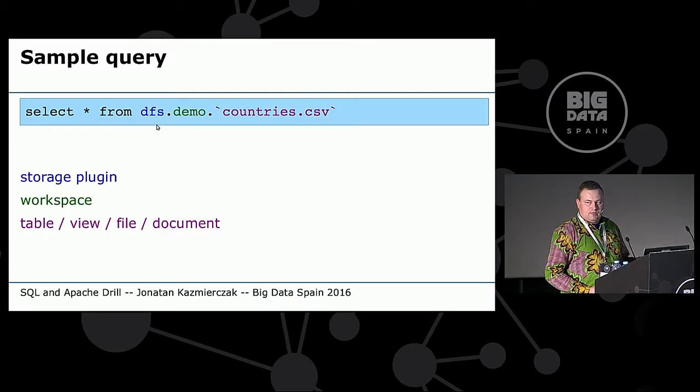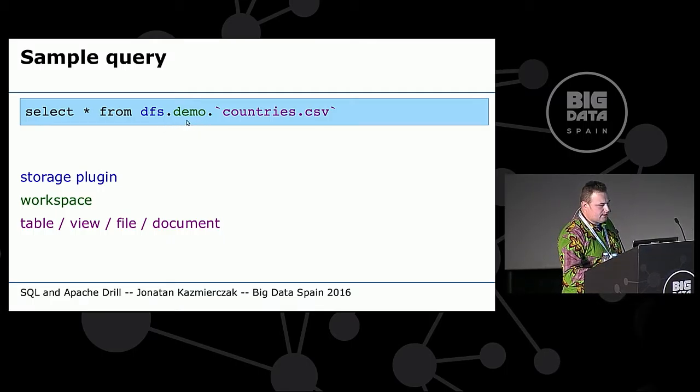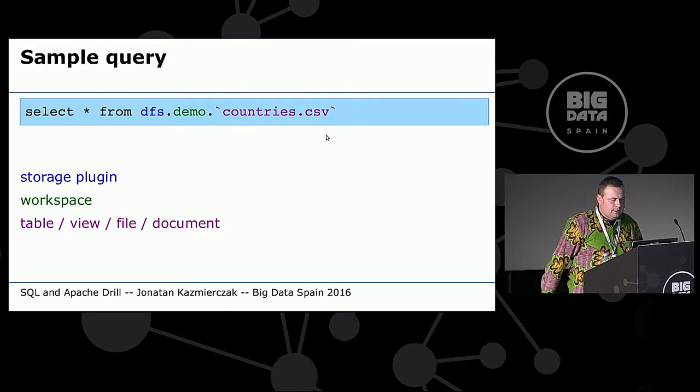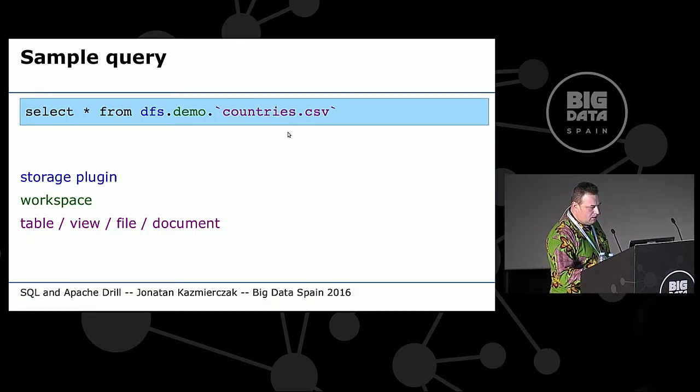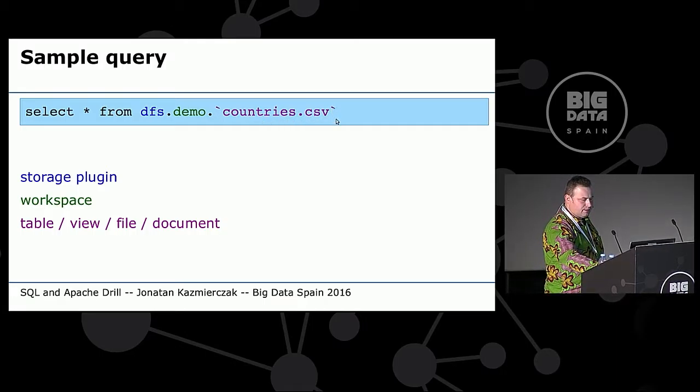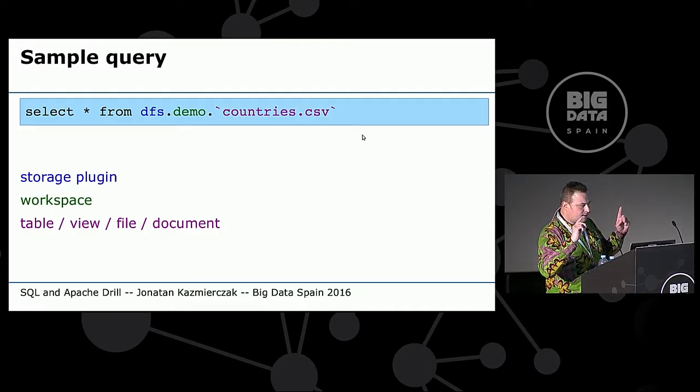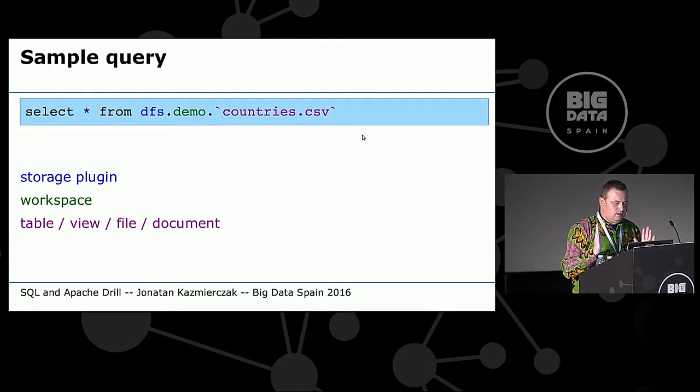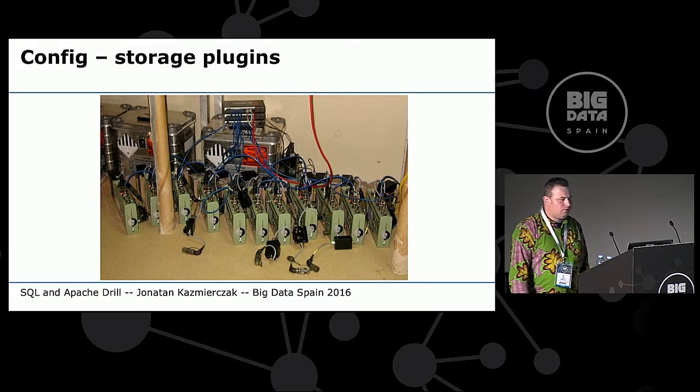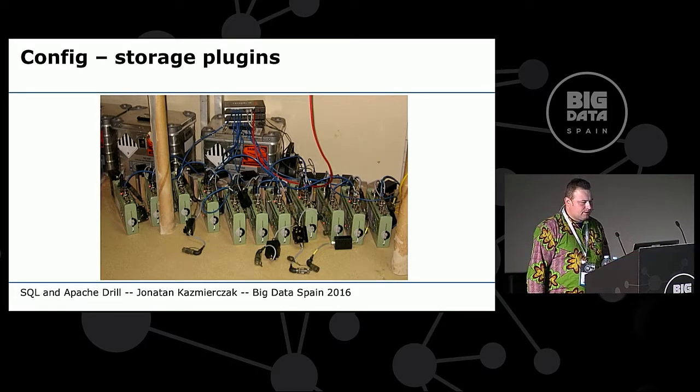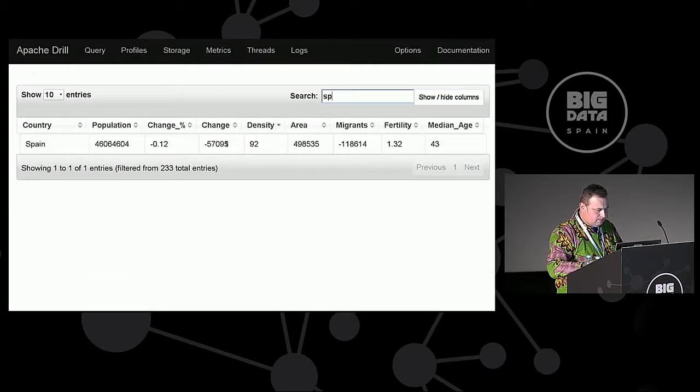And what is also worth to mention, that if this is the drill bit which now I'm using for my queries, if the workload is quite high, it can split the workload to other drill bits for them to process data in parallel, and then the initial one collects all the results and gives back to client. Now let's take a look at our initial query. What does it mean, those elements? First one is storage plugin - in this case, we want to query file system. Then, workspace, in this case demo. And then, whatever entity we have - can be table, view, file, document. In this case, it's a CSV file. You can also notice those backticks. We need them here because we have the dot. The text in backticks are just strings.